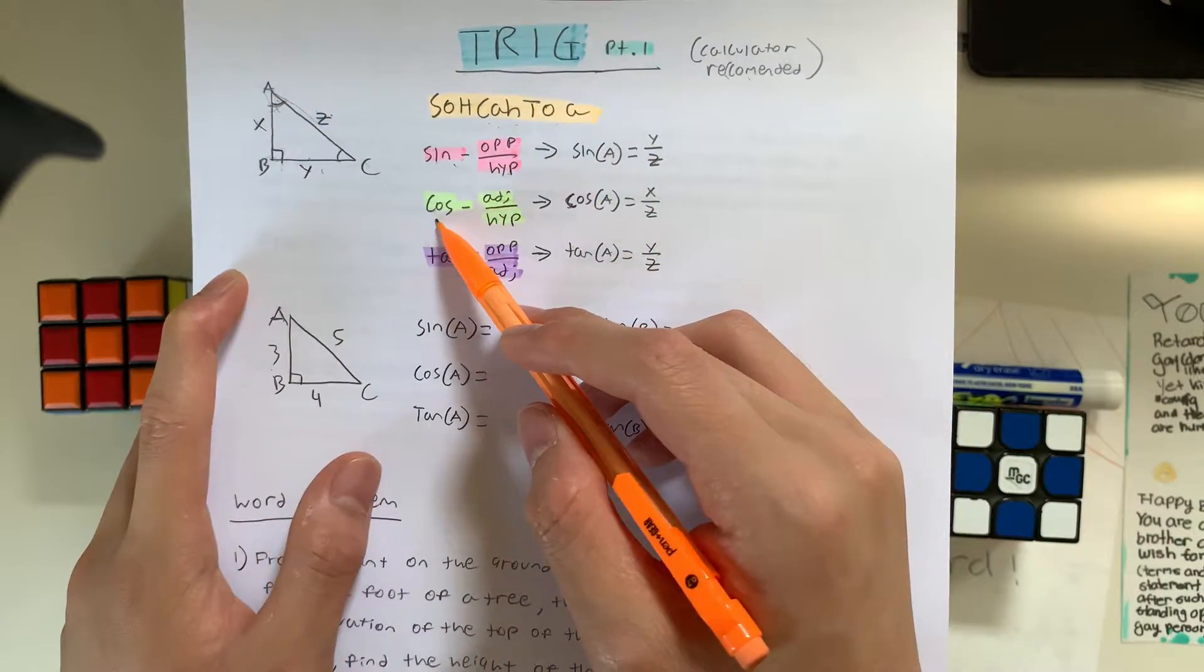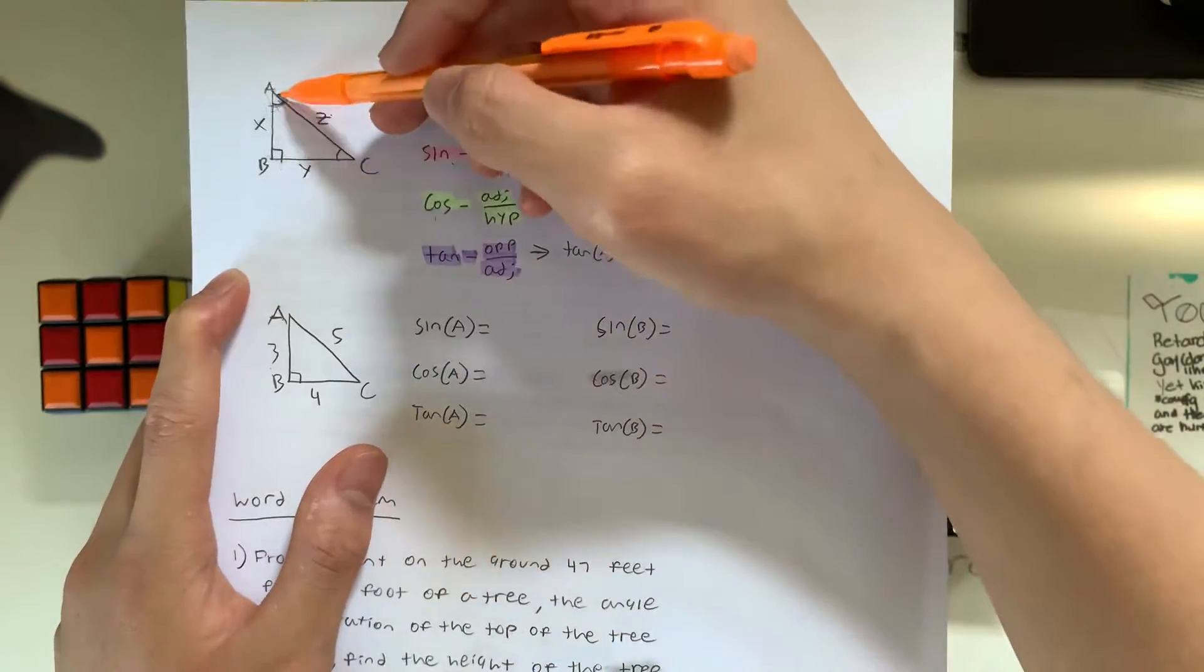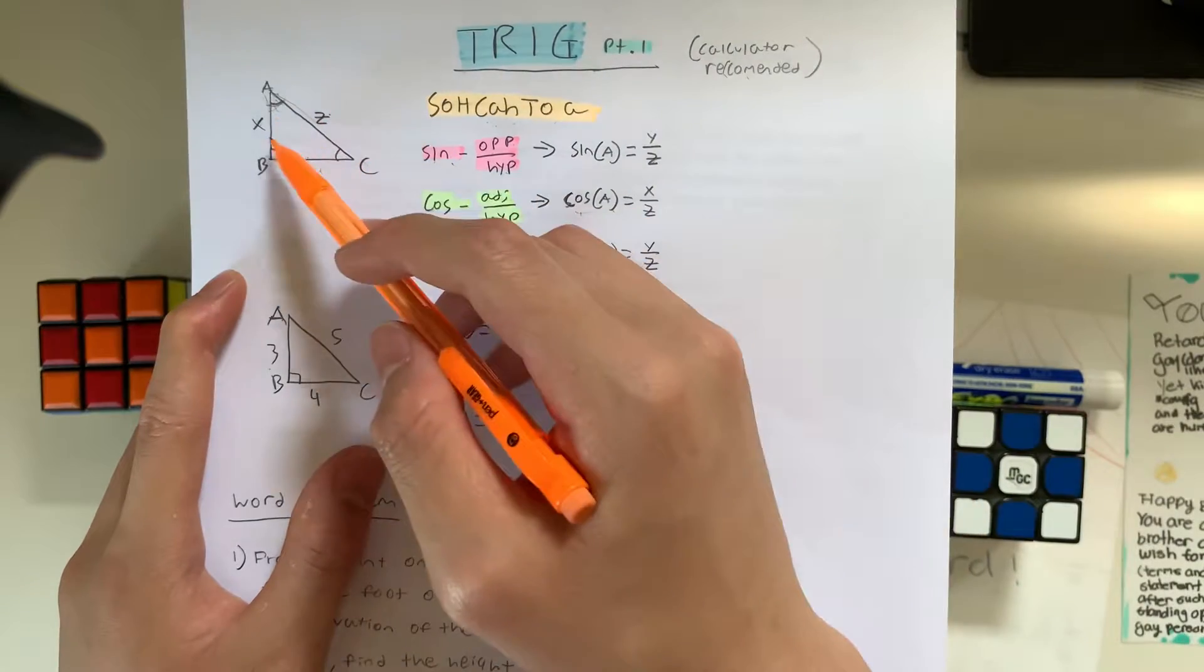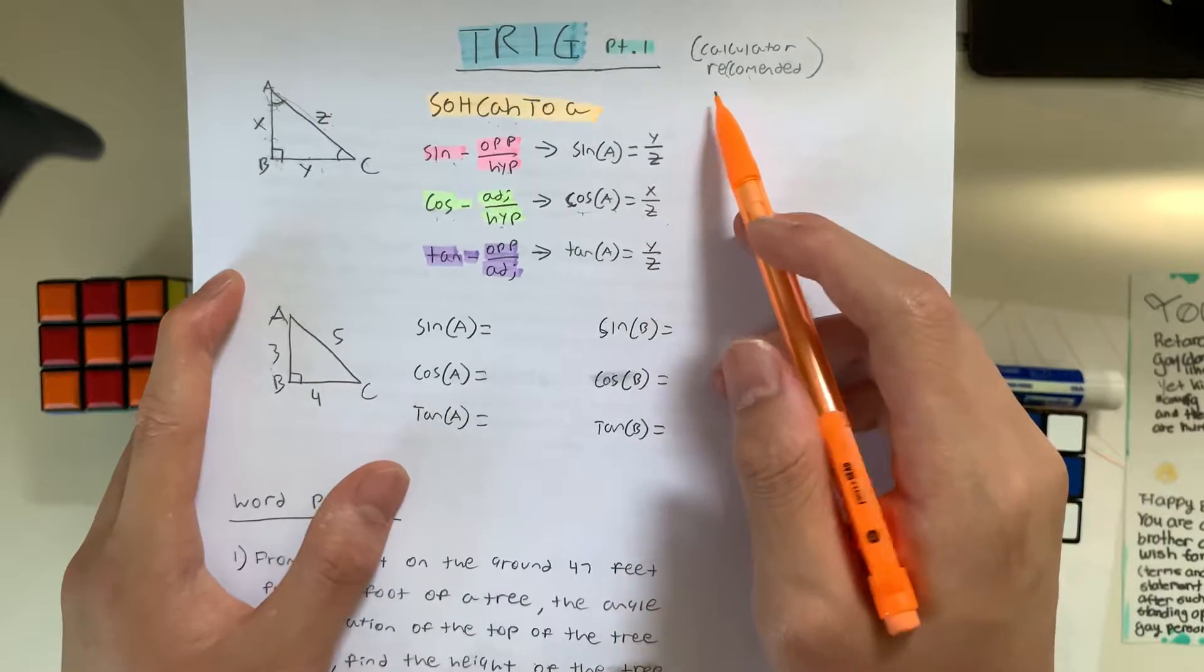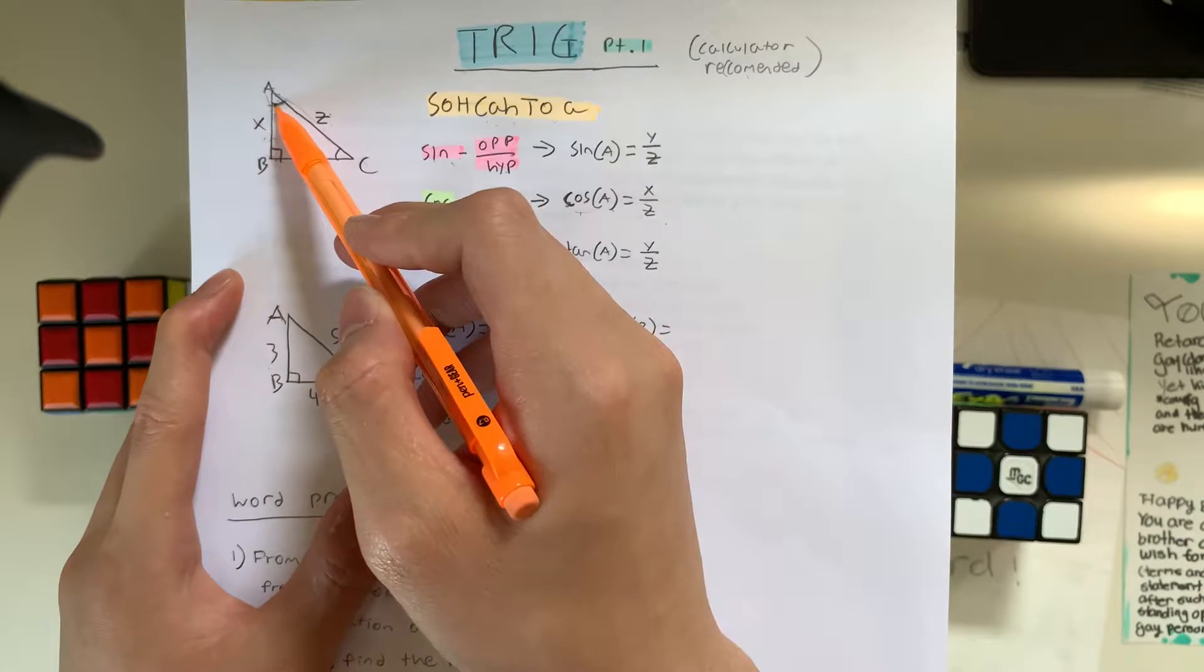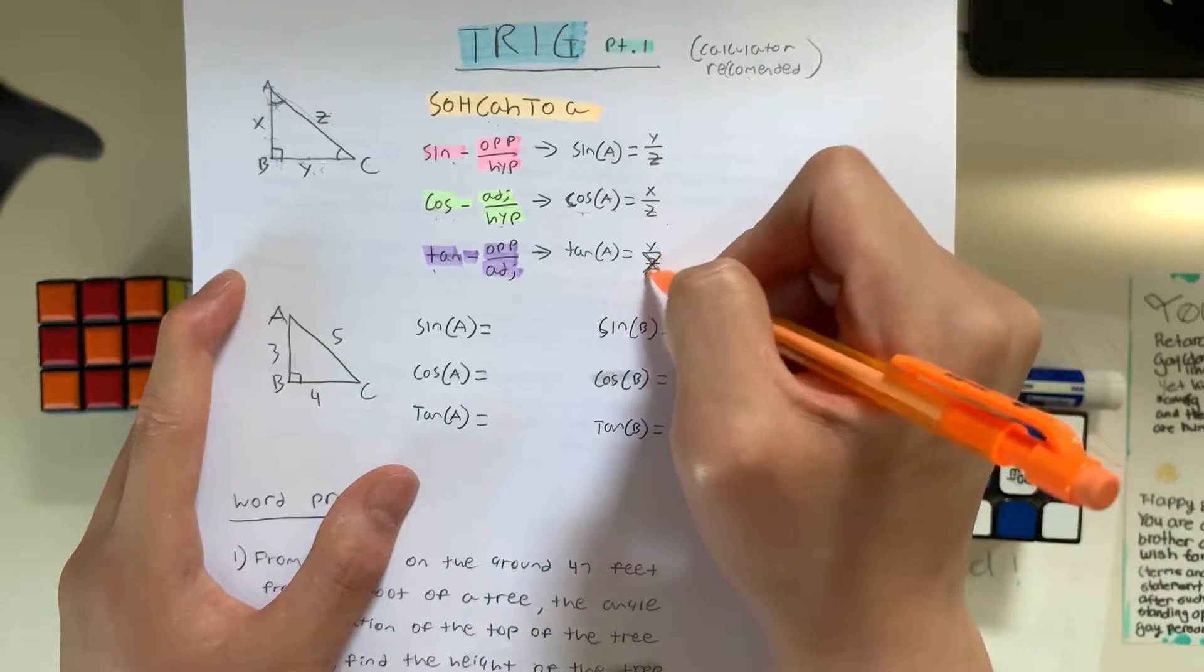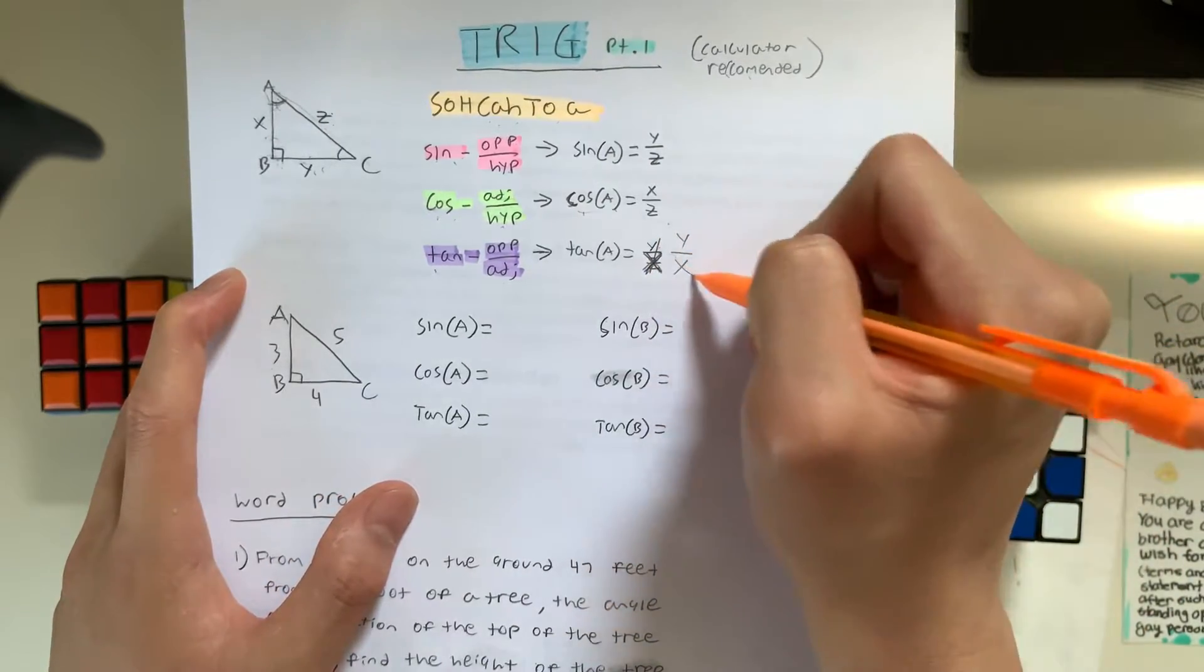And then next we have cosine, which is adjacent over hypotenuse. So I'm also going to use angle A in this case. Adjacent is the side right next to it. So the side right next to it is X over the hypotenuse, which is Z. So X over Z. And lastly, we have tangent, which is opposite over adjacent. So it's Y over X.